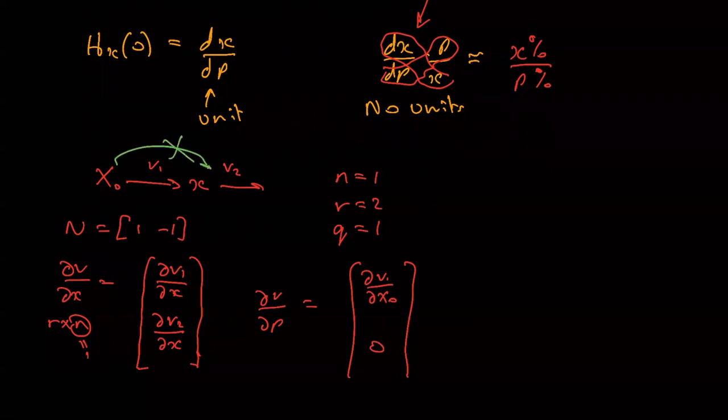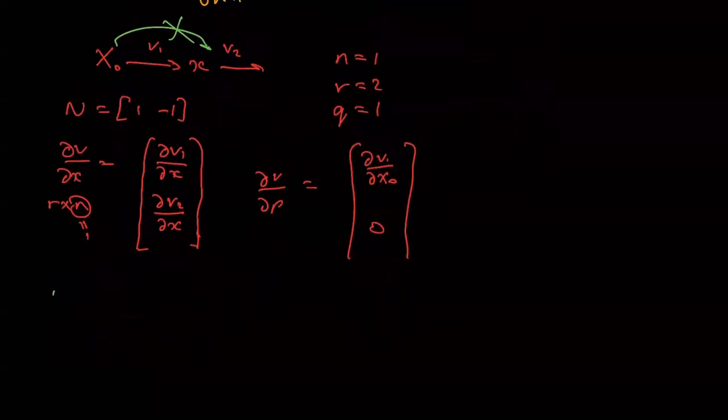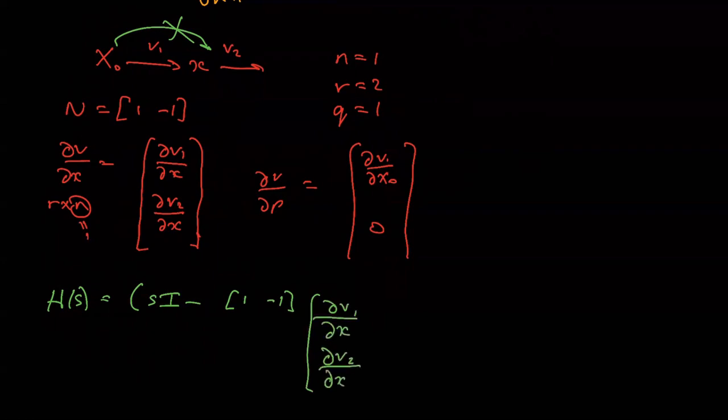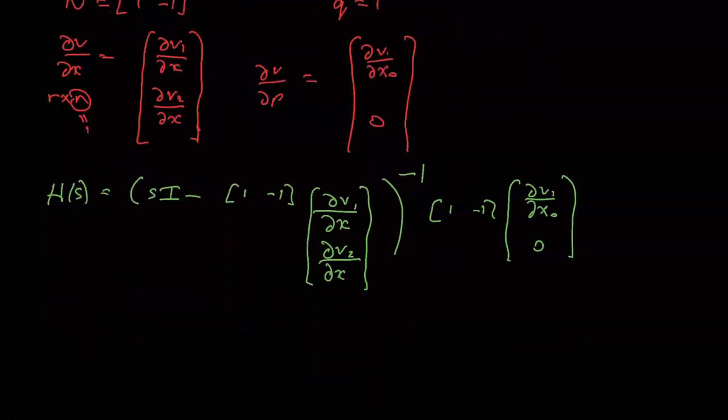x0 does not affect v2, so that's a zero. So we can combine these then. So h of s equals s times I minus stoichiometry matrix times that vector, to the minus one, and then we have another stoichiometry matrix and then we have the dv1 dx0.